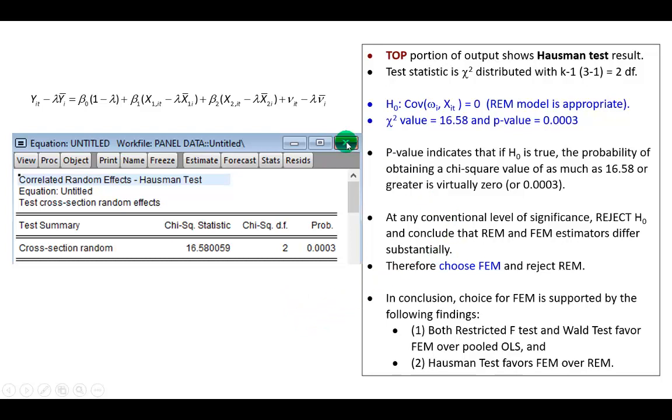Alright, so this is the top portion which shows output for the Hausman test. The test statistic that you see here is chi-squared distributed with k-1 degrees of freedom, where k is the number of parameters including the intercept. So that's beta sub 0, beta sub 1, and beta sub 2. Three minus one is two. That's what you see right here.